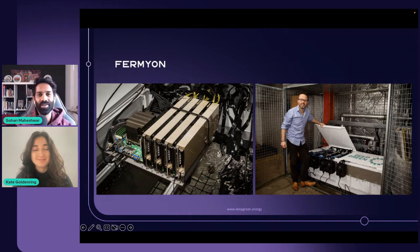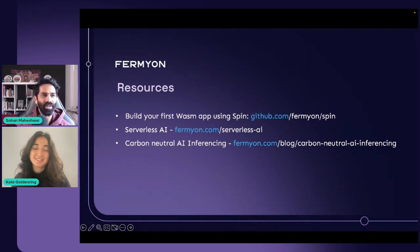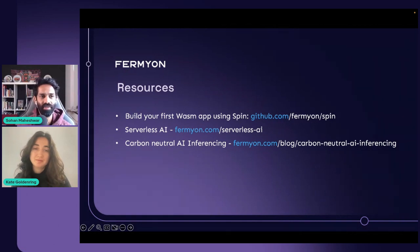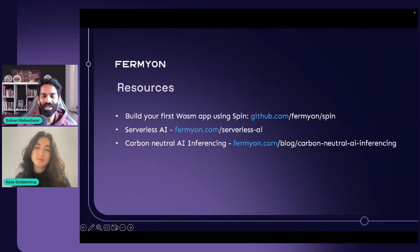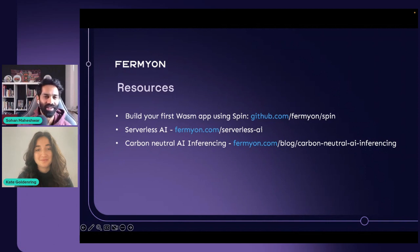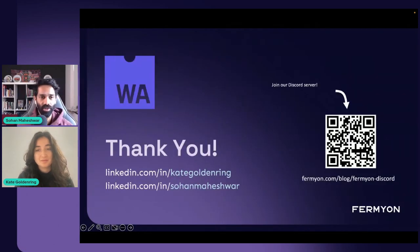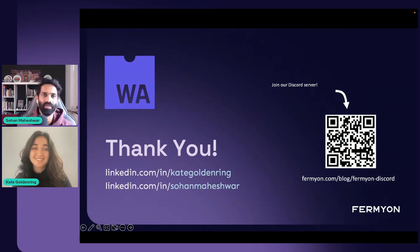We've thrown a lot of interesting and hopefully informative concepts at you today. For resources: check out building your first WebAssembly app using Spin at github.com/fermyon/spin — it's very easy to get started. Also check out serverless AI inferencing at fermyon.com/serverless-ai. If you're interested in carbon-neutral AI inferencing, we also have a blog post with the in-depth technical details around GPUs, energy, and cloud. Join us on our Discord server at fermyon.com/blog/fermyon-discord, and feel free to connect with both Kate and myself on LinkedIn. From Kate and myself — thank you and have a good rest of the day.